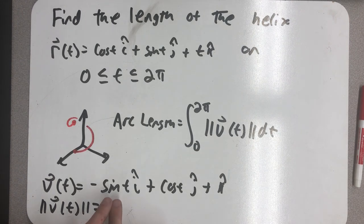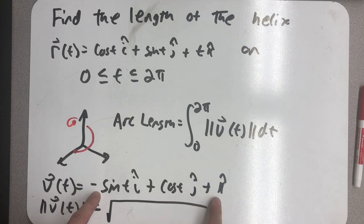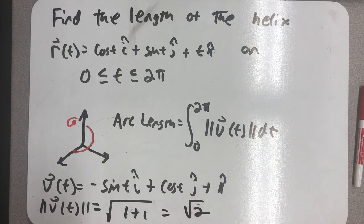The square root of sine squared plus cosine squared plus 1. Well, sine squared plus cosine squared is 1. The speed is the square root of 2.